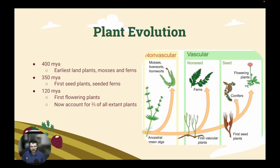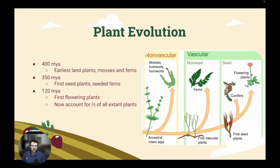The first plants would have been an ancestral green algae. That green algae slowly would have drifted onto the surface of the earth and started to interact with the surface of the earth, leading to the formation of the earliest plants, which would have been our non-vascular plants like mosses and ferns. That would have taken place about 400 million years ago.